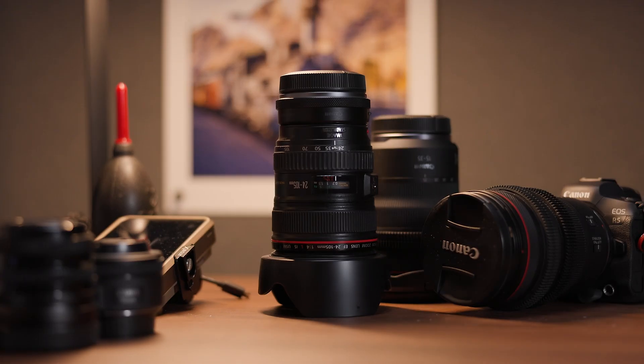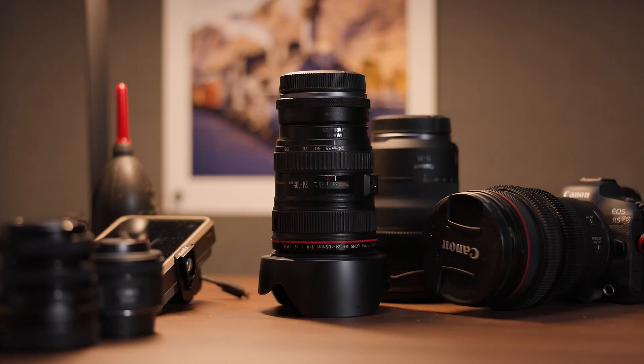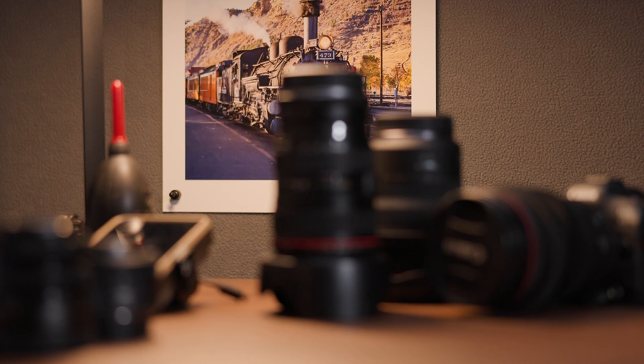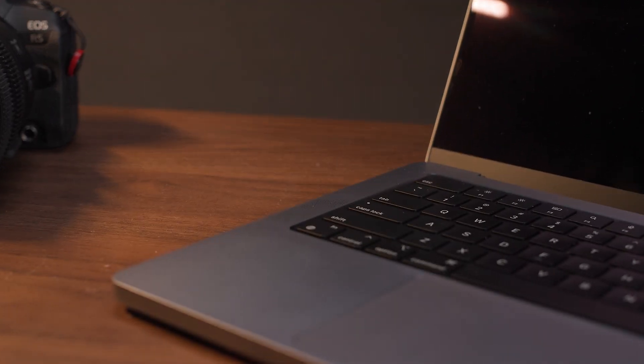This aberration is a problem for video shooters where the change in composition while focusing can become very distracting, especially if it happens when pulling focus repeatedly between two actors in a scene. Fortunately, purpose-built video and cinema lenses don't actually do this, or at least they're not supposed to. Unfortunately, for most of us using hybrid lenses on our mirrorless cameras, many of our lenses still suffer from this aberration.